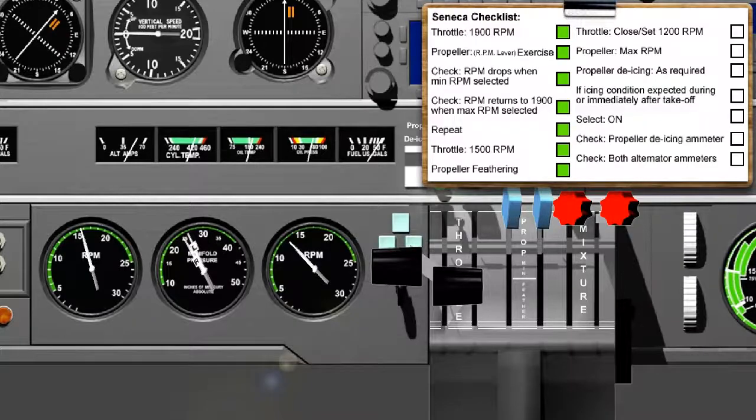Propeller feathering check. Moving the propeller control lever below the white line will cause the propeller blades to move towards the feathered position and the RPM to decrease. If, as is the case with the propeller we are considering, a centrifugal latch mechanism is fitted, it's important that the RPM should not drop below 1000 because the centrifugal latches will not become engaged and the propeller will feather, which is not what we're trying to achieve in this check.